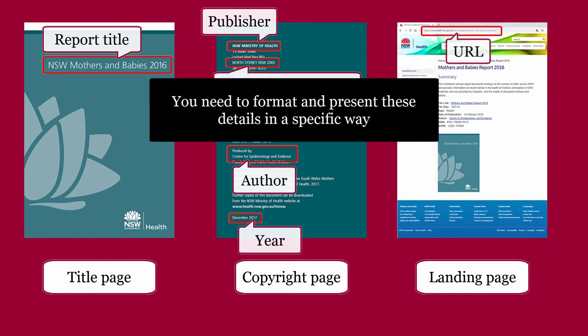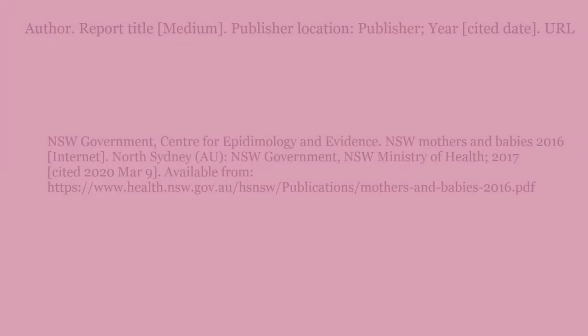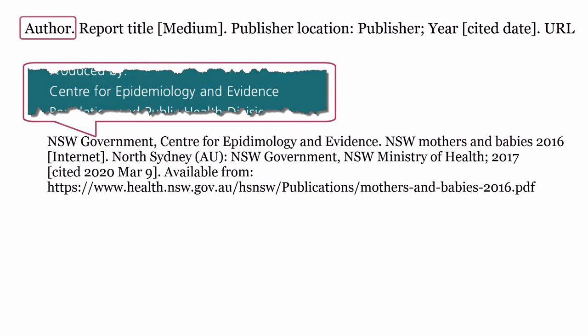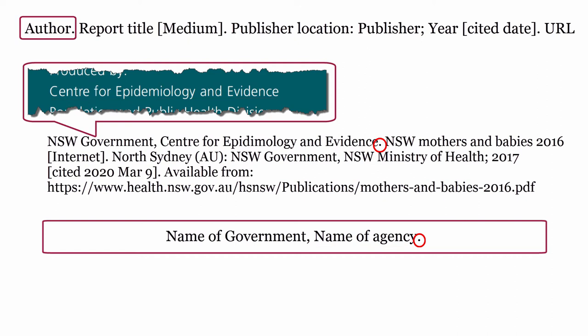You need to format and present these details in a specific way. Author: this is the government agency that authored the report. When an entry starts with a government agency as the author, begin the entry with the name of the government, followed by a comma, then the name of the agency. Finish with a full stop.